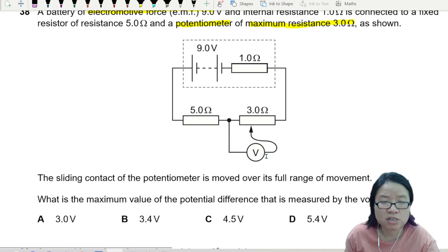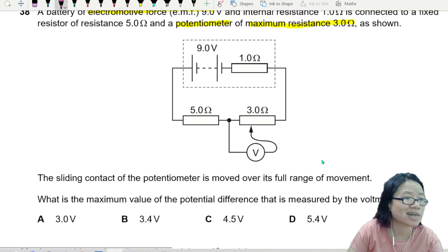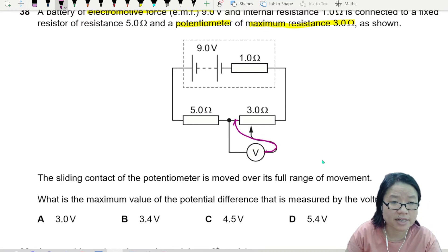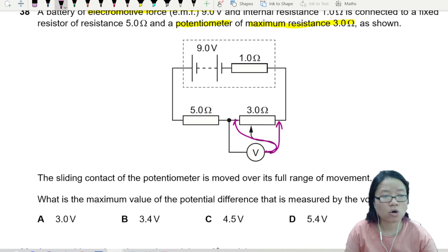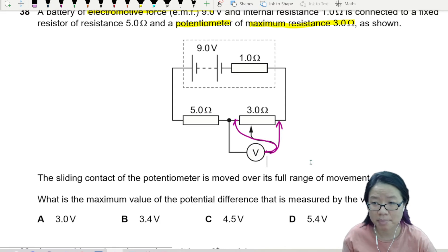The sliding contact of the potentiometer is moved over its full range of movement. This means the sliding contact can be here, and the sliding contact can be anywhere here, and finally it can also be here. What is the maximum value of the potential difference that is measured by the voltmeter?